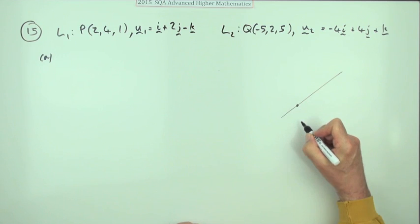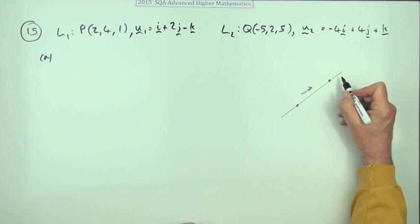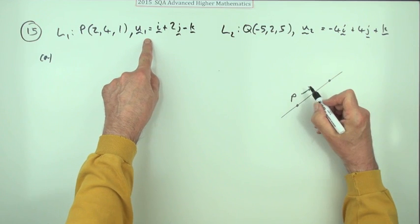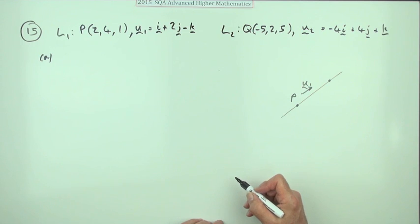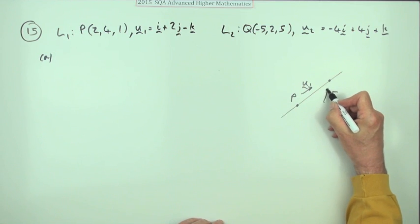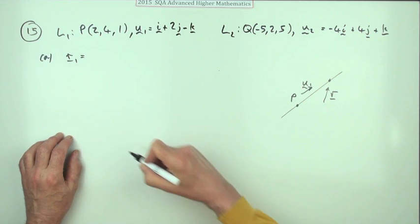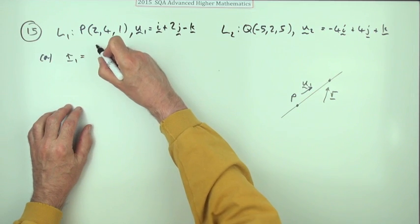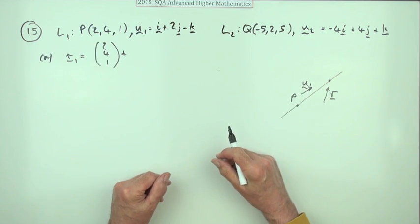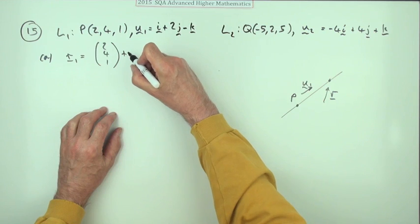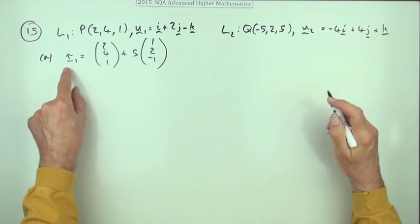To get the equation of a line you need a point on it and the direction it's heading in. You start at that point — in this case P — and take steps along the direction of u1 to arrive at an arbitrary point, usually called r for its position vector. For the first line, you start at the point (2, 4, 1) and take steps in the direction, using parameter s, so the direction vector is (1, 2, −1).